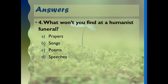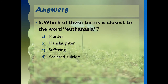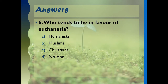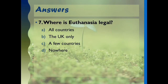Number four: what would you find at a humanist funeral? If they're atheists it's pretty obvious - no prayers. Number five: which of these terms is closest to the word euthanasia? That's assisted suicide. It comes from the Greek word 'eu' and 'thanatos' - Thanatos is the god of death and it means gentle death. Number six: who tends to be in favour of euthanasia? Humanism isn't against it as such - they believe it's the last choice, the last thing you would do, but they tend to be more in favour of it than religious people. Religious people believe in something called the sanctity of life. There are religious teachings which are strictly against it, for example 'do not kill' in the Ten Commandments is the easiest one to remember.